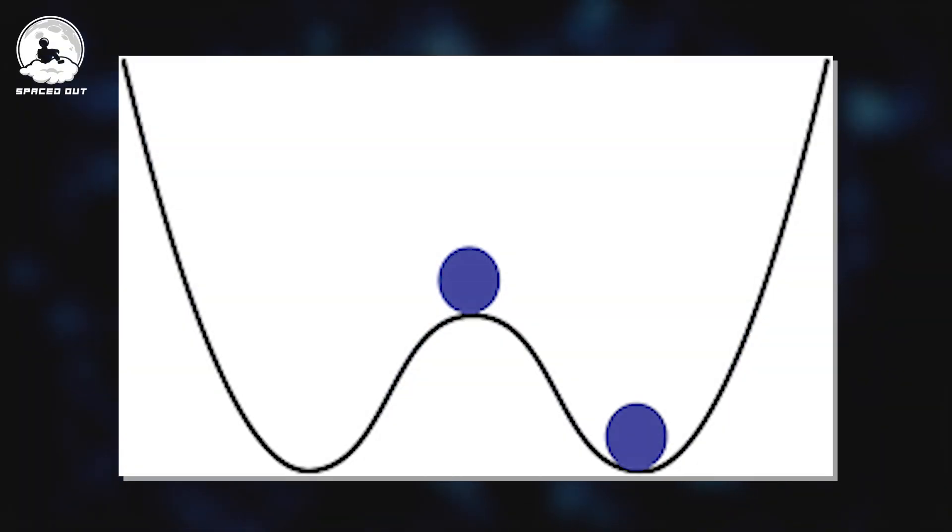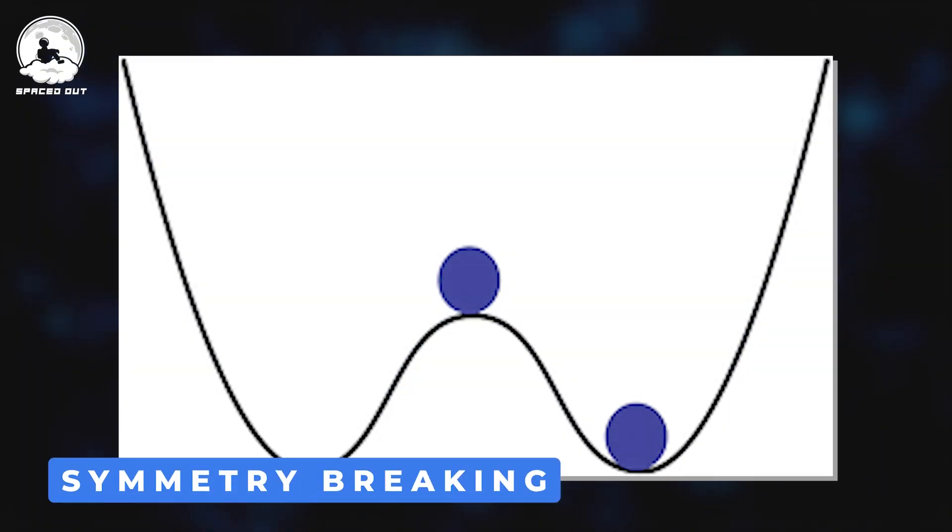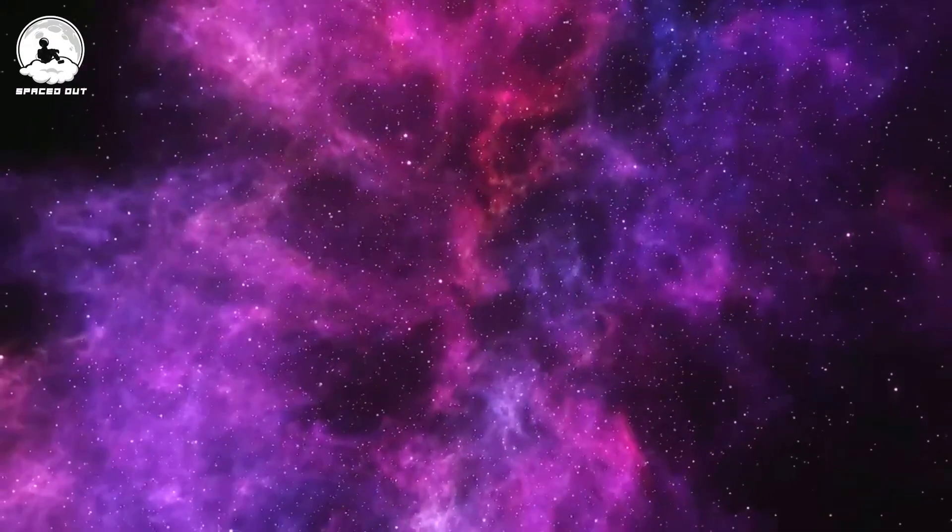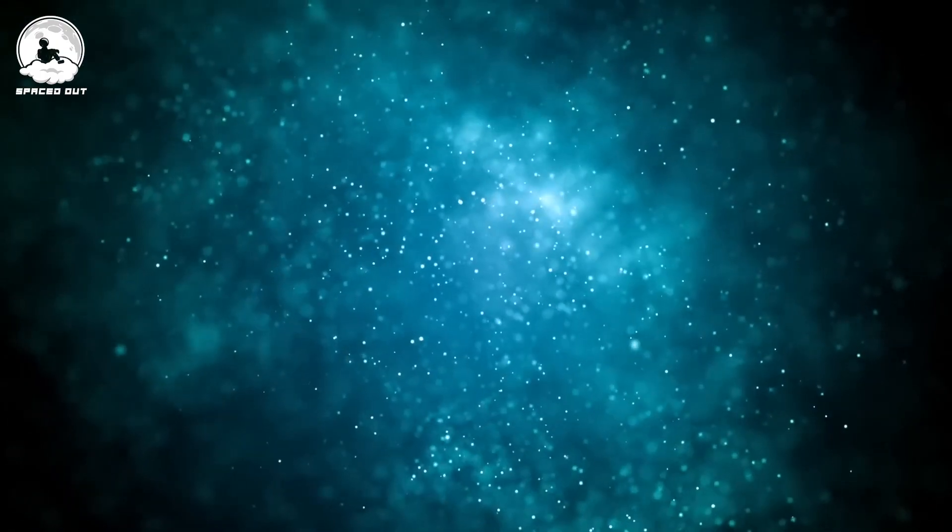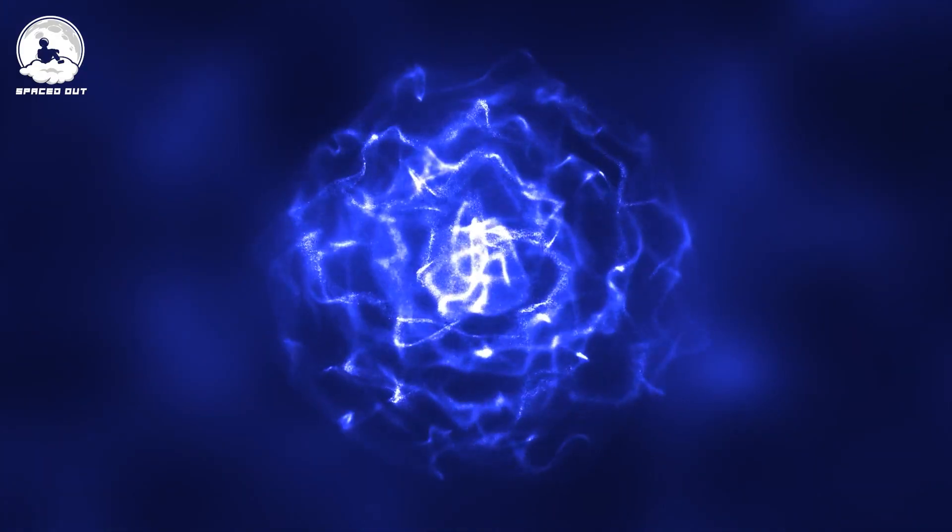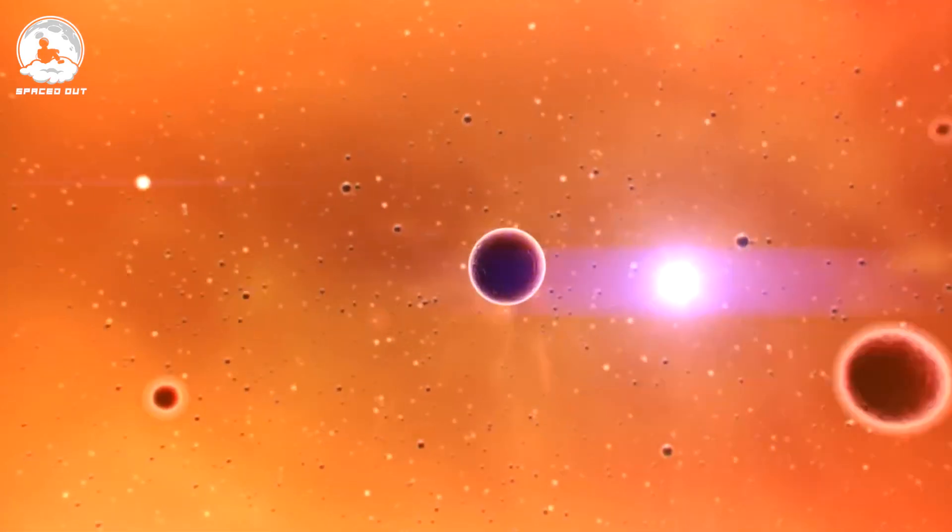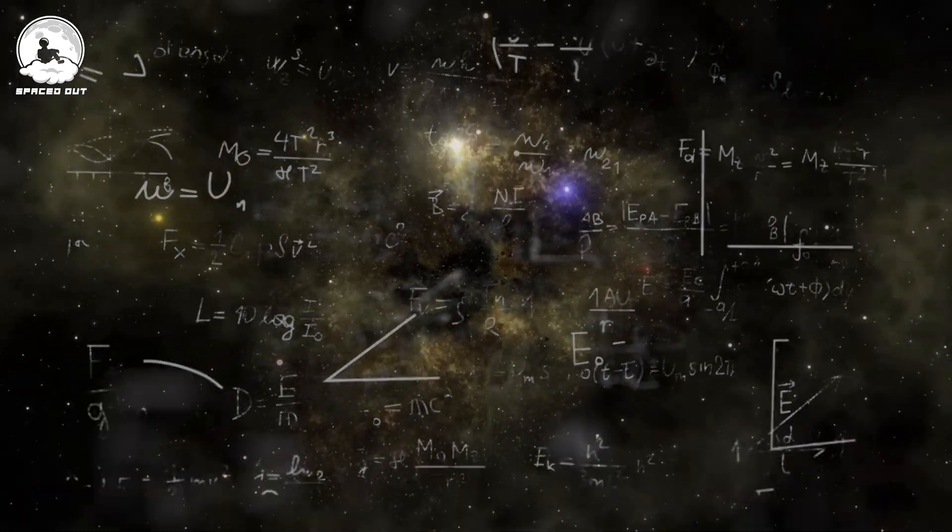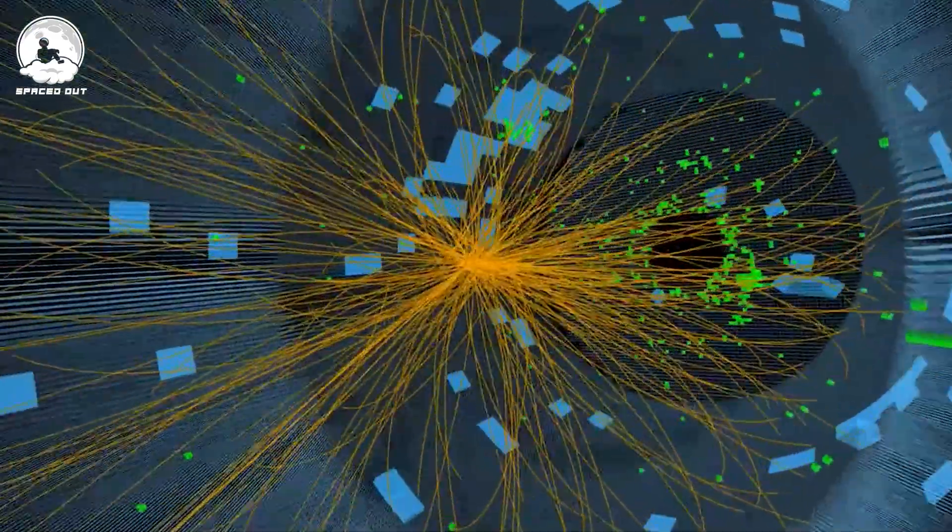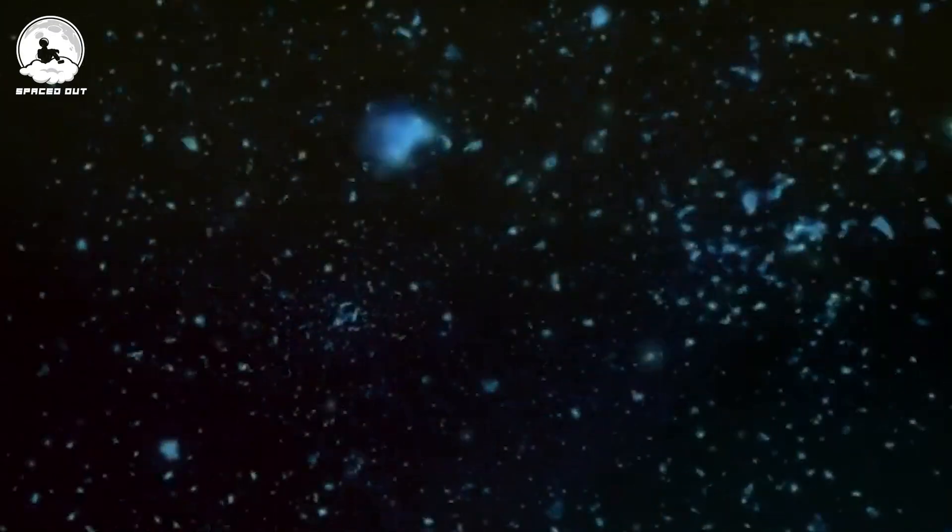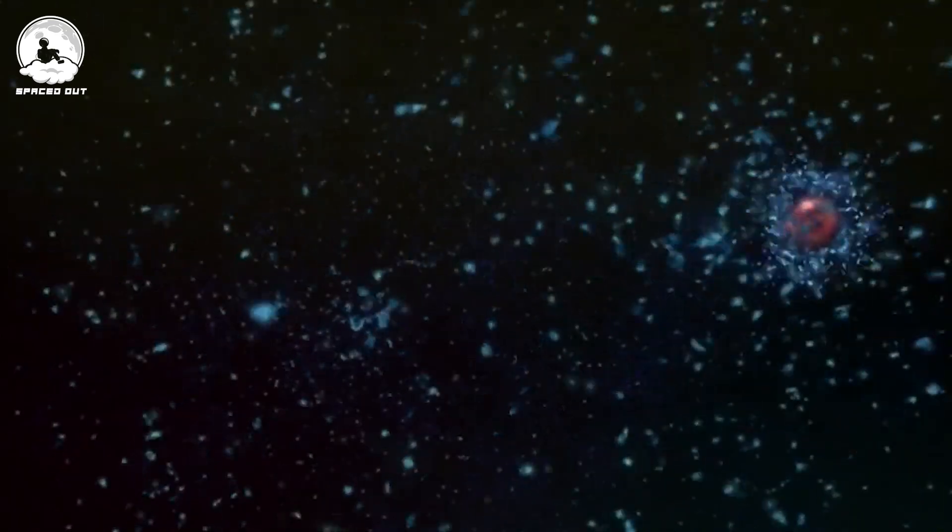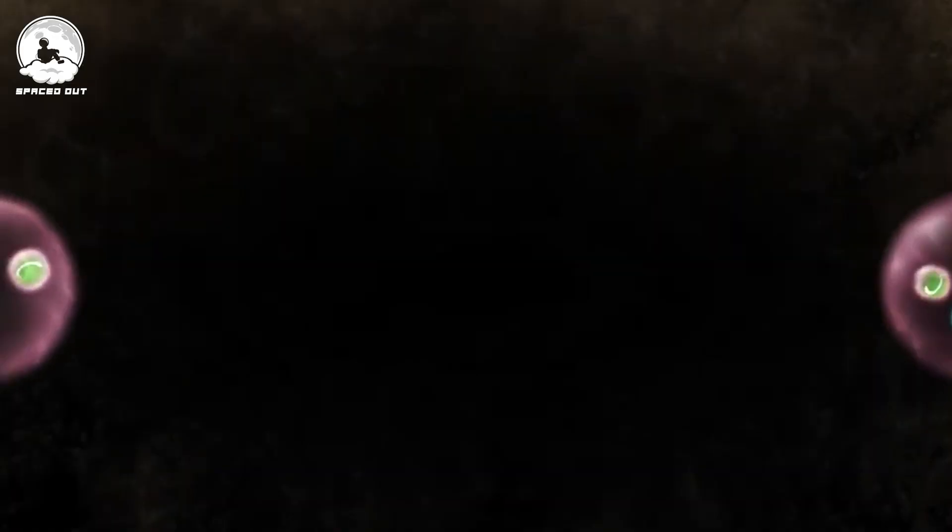This changed when an event called symmetry breaking happened. The Higgs field took on a different value, granting particles mass based on its interaction with them. Because of the change in this field, electromagnetic forces and nuclear forces came into existence, and everything settled into the kind of physics that we know today. The discovery of the Higgs boson gave us hints into how the Higgs field behaves and how it has evolved over the years.